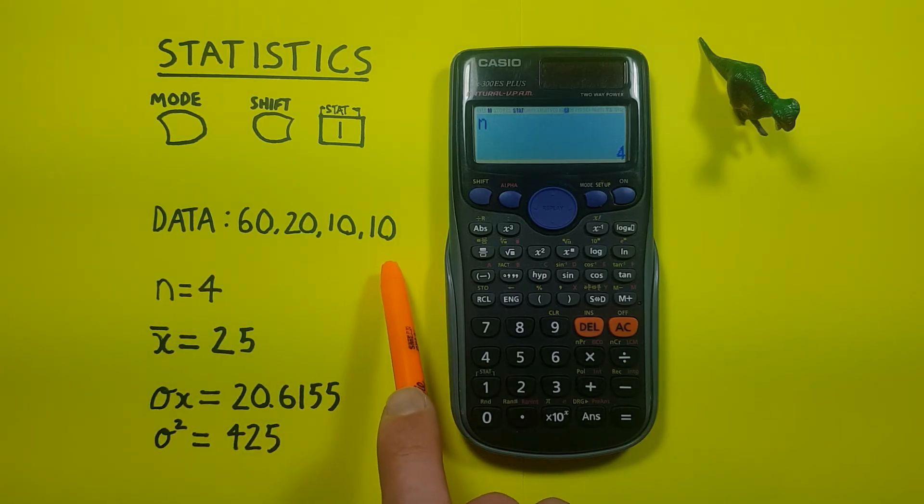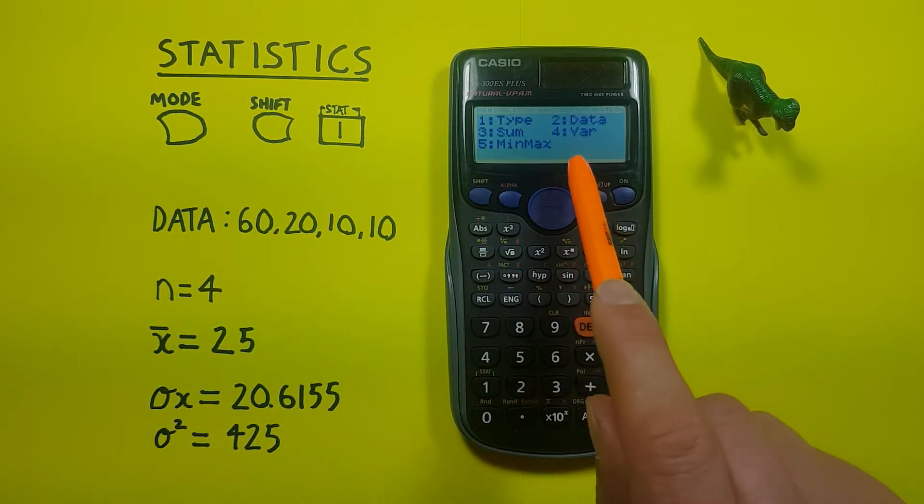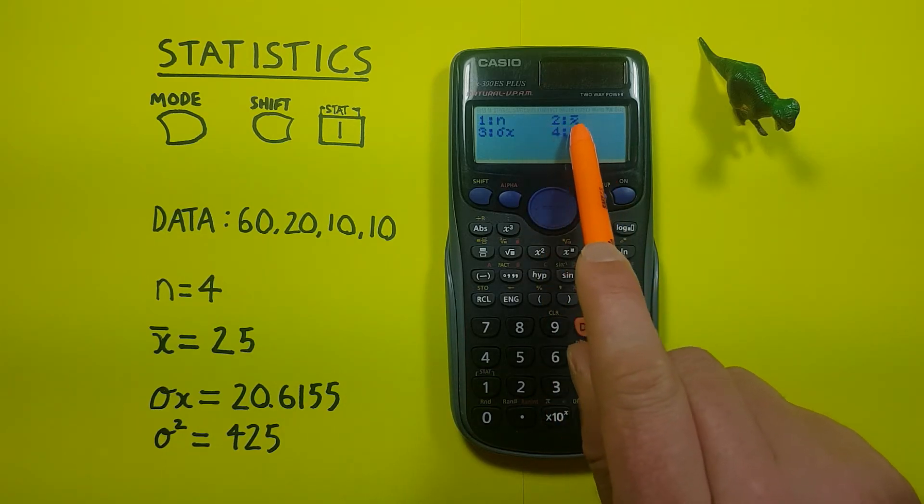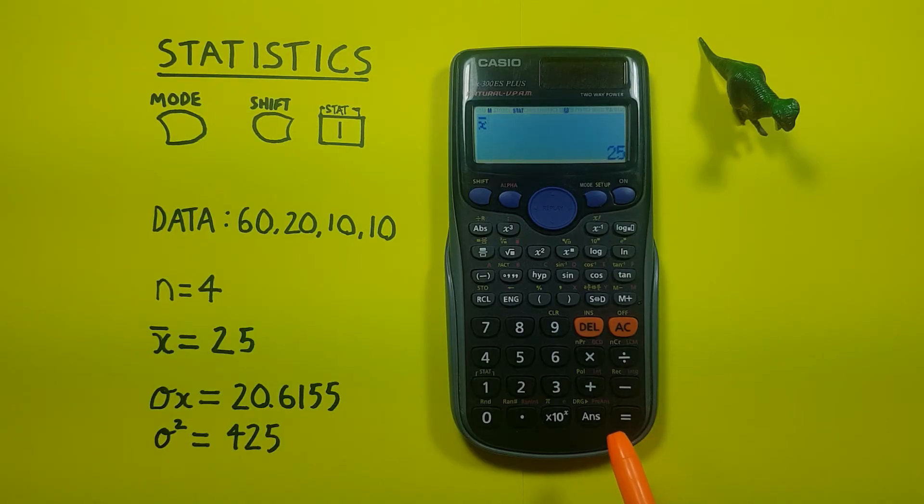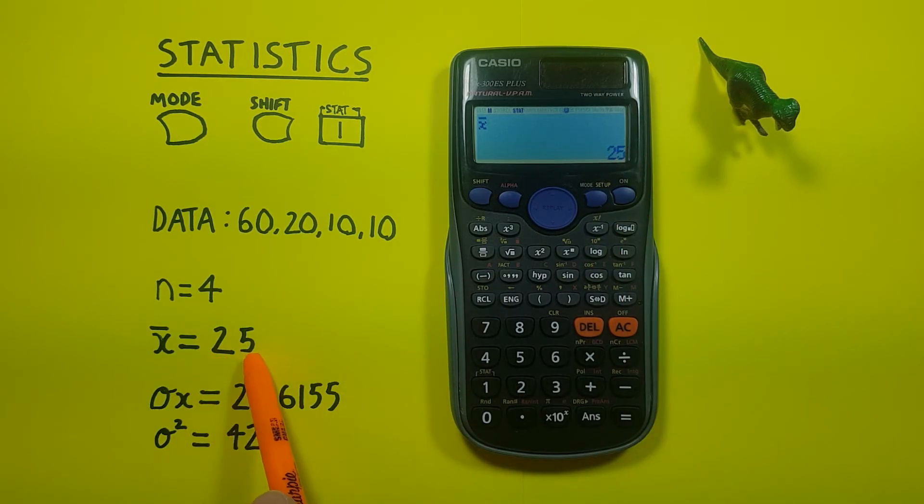Next, let's find our mean. Shift 1 again and 4, and we see number 2 is x̄ or mean, so we press 2, equals, and we see we get a mean of 25, which is correct.